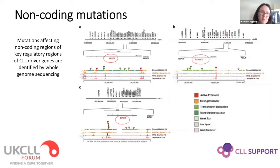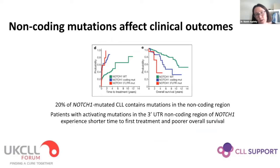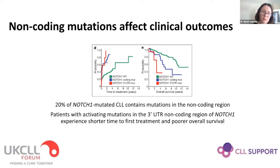Non-coding mutations can affect regulatory elements in genes. Using whole genome sequencing, non-coding mutations have been identified in numerous regulatory regions of key CLL driver genes — including BTK3 and SAMHD1 — and these non-coding mutations have a comparable impact on clinical outcomes. Roughly one in five patients with unmutated CLL has the mutation outside the exon or in the non-coding region. In terms of time to treatment and overall survival, patients with coding mutations and those with non-coding mutations completely overlap, confirming that non-coding mutations have an adverse clinical impact.